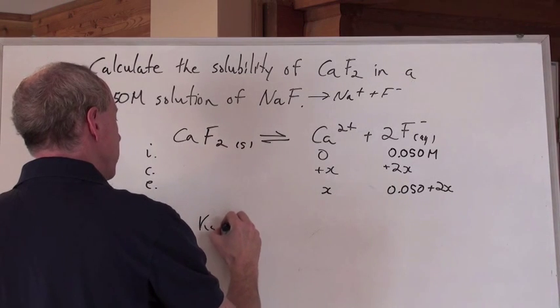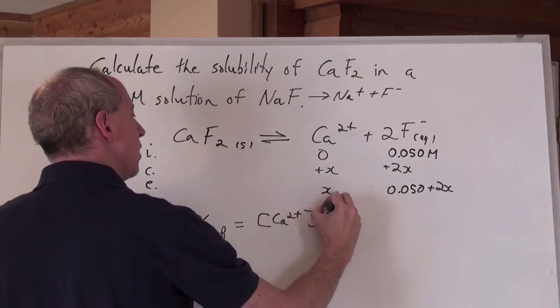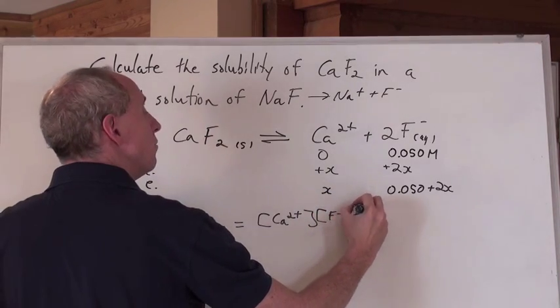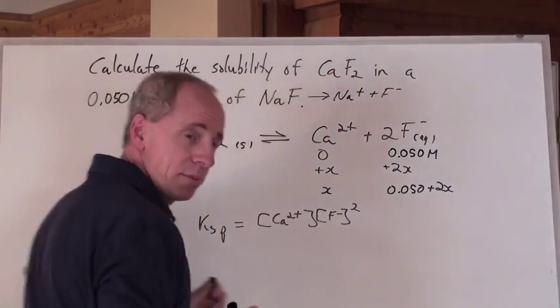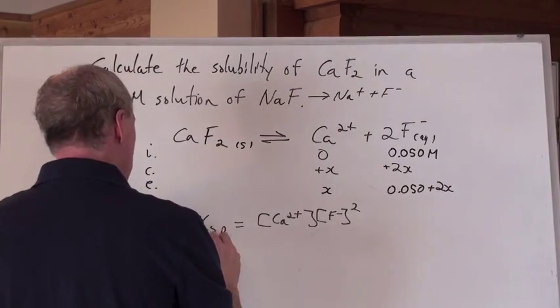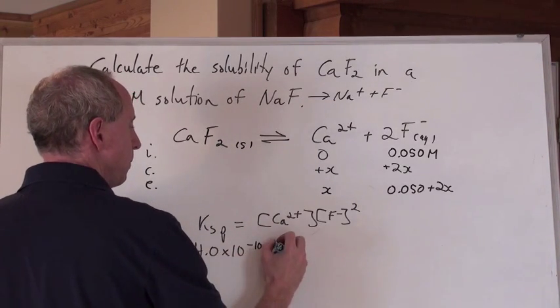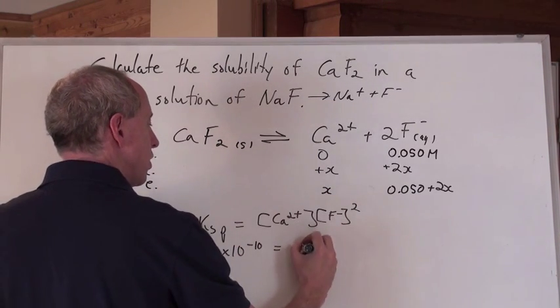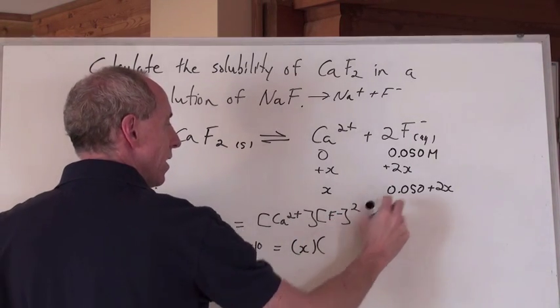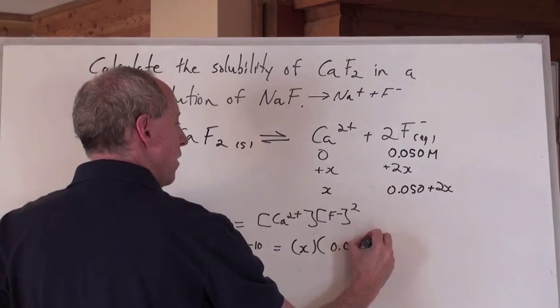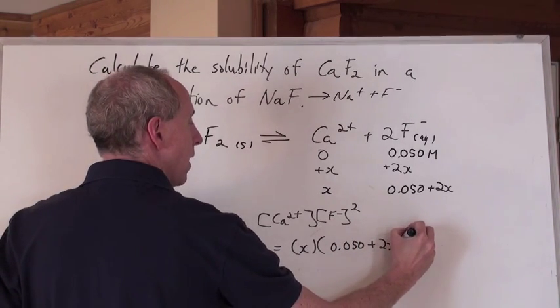Set up your expression. Ksp equals concentration of the Ca2+ times the concentration of the F negative, but it's squared. The Ksp for this, I happen to just know, is, you can look it up on a table because you're going to need it. It's 4.0 times 10 to the negative 10. And that equals, what's the concentration of the calcium? X. What's the concentration of the fluoride? It's this, 0.050 plus 2X, and that's squared.